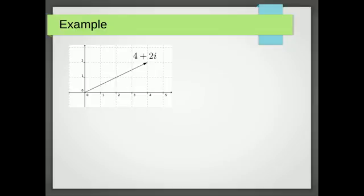Now we want to find the length of that line so let's call it R. Because it's a right angle triangle we're going to use Pythagoras' theorem to get R equals 4 squared plus 2 squared.